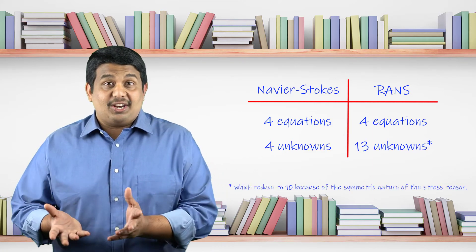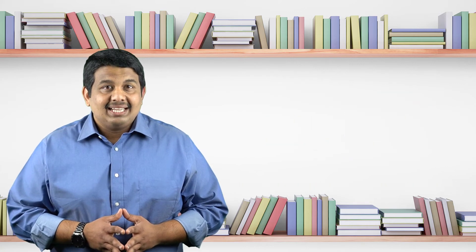Nine of these unknowns are the Reynolds stresses. In order to make these set of equations well defined, we either need to have additional governing equations, one each for the Reynolds stress terms, or express the Reynolds stress tensor in terms of the mean flow variables, thereby avoiding any new equations.